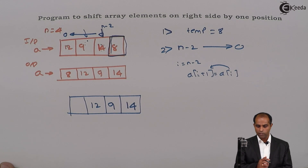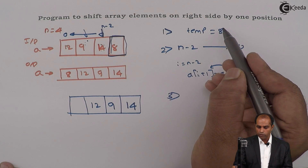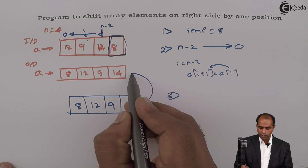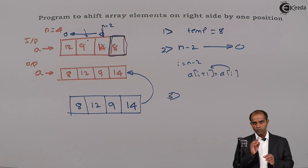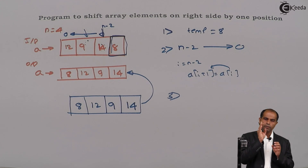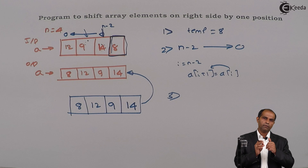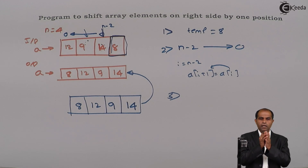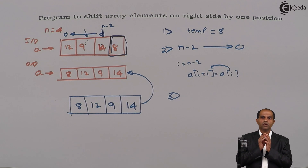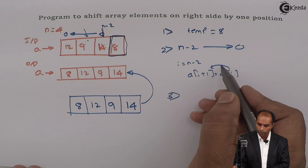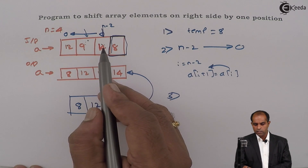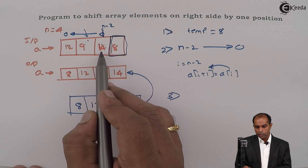For the last step — step three — whatever element is in temp has to be copied to the first position. The element which was going to go out was copied onto temp. We started from N minus 2 and went towards 0. The current value where i is pointing is stored in the next location, i plus 1. So A of i is transferred to A of i plus 1. Since the assignment operator works from right to left, A of i (which is 14) goes to that place.